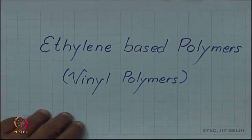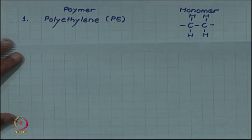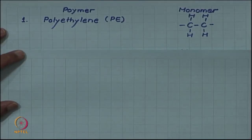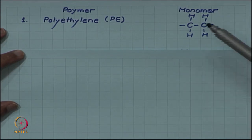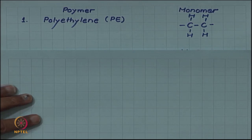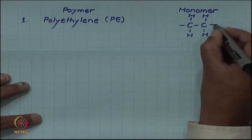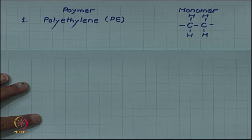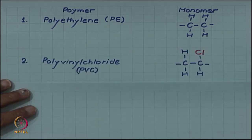Let us look at some examples of ethylene-based polymers. We have already seen polyethylene, which is an example of an ethylene-based polymer. By substitution of hydrogen atoms by some other atoms, other related polymers are obtained which are all called vinyl polymers. Polyethylene was our starting example with a monomer of two carbon atoms joined with hydrogen atoms, so two bonds are free and these will keep connecting to other monomers to give you a polymer.